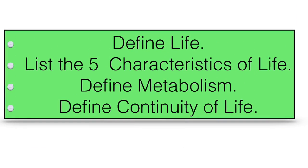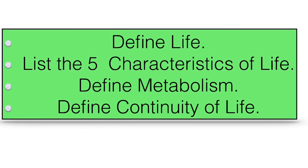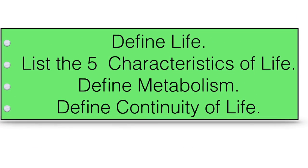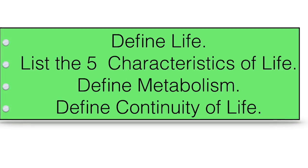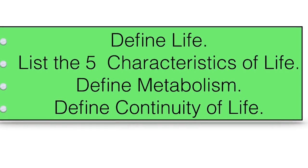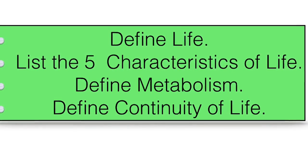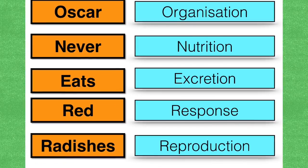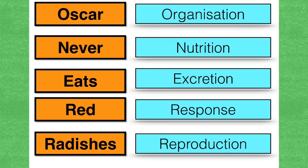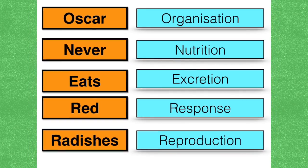At the end of all this, make sure you can define life, list the five characteristics of living things, define metabolism, and define the continuity of life. And remember: Oscar Never Eats Red Radishes.